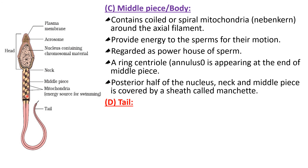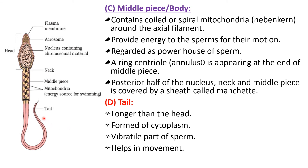The last part of the sperm is the tail. The tail is longer than the head, and this slender part is the tail region. Some portion of the tail has cytoplasm, while the last portion of the tail contains almost no cytoplasm. The tail is the vibrational part of the sperm — it creates vibration to give the sperm its motion ability and movement.